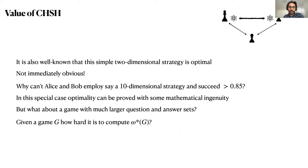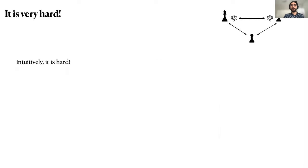Well, in the case of CHSH we are lucky. With some mathematical ingenuity we can show that the two-dimensional strategy is really the optimal play. But the situation is not at all clear when we go to a game with a much larger question and answer set and one that has a very complicated rule set. This motivates the following question: given a game G, how hard is it to compute its value?